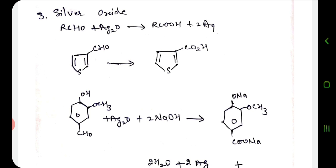The procedure is suitable for use with aldehydes that contain other oxidizable groups. The sodium salt of vanillic acid, for example, can be made in high yield by treating vanillin with silver oxide in the presence of sodium hydroxide. If another functional group is present that can be oxidized, we obtain its sodium salt. Vanillin is oxidized and converted into vanillic acid.